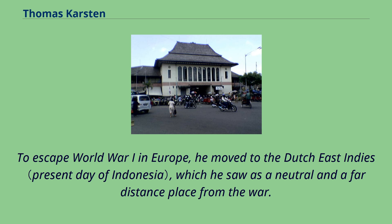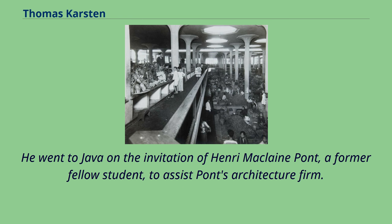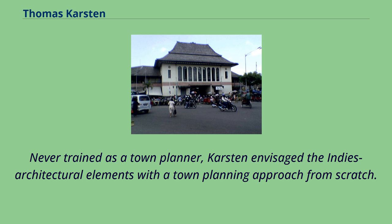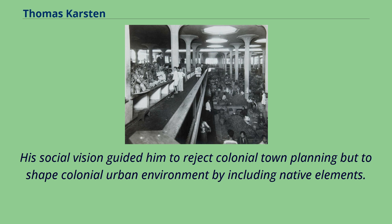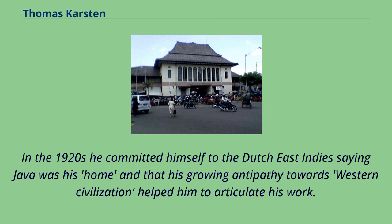To escape World War I in Europe, he moved to the Dutch East Indies, which he saw as a neutral and far-distant place from the war. He went to Java on the invitation of Henri McLean Pond, a former fellow student, to assist Pond's architecture firm. Never trained as a town planner, Carsten envisaged the Indies' architectural elements with a town planning approach from scratch. His social vision guided him to reject colonial town planning and to shape the colonial urban environment by including native elements. In the 1920s he committed himself to the Dutch East Indies, saying Java was his home, and his growing antipathy towards Western civilization helped him to articulate his work.